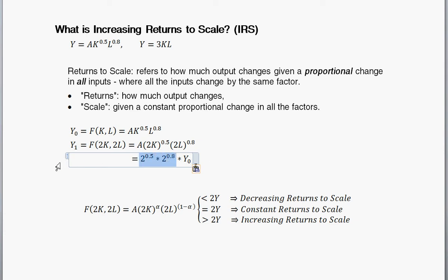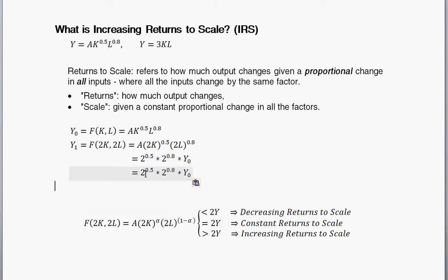Let's simplify this term here. So, 2 to the 1 half times 2 to the 0.8. How we combine those exponents is we just add them together. So, 0.5 plus 0.8. 0.5 plus 0.8 is equal to 1.3. So, we have 2 raised to the 1.3 times our initial level of output.